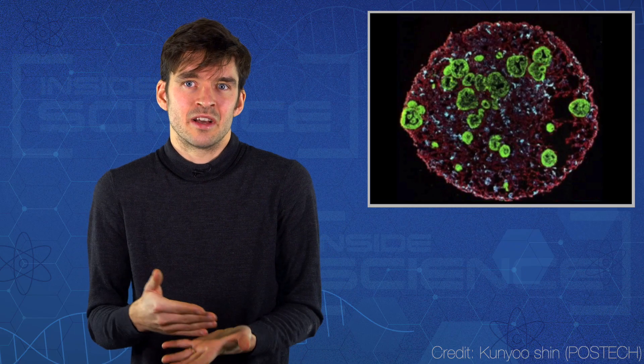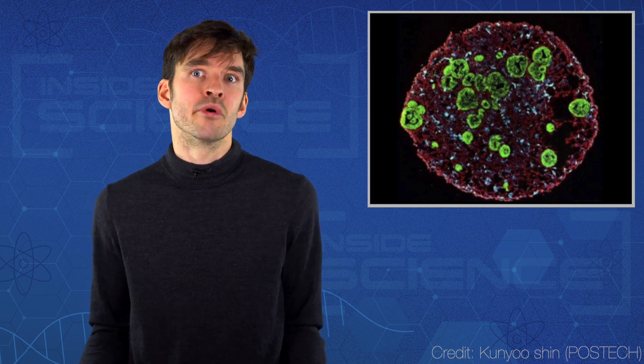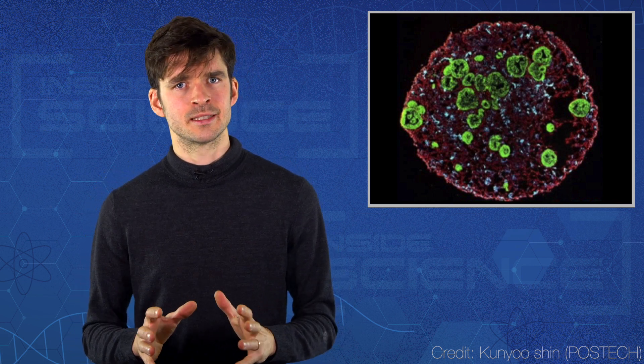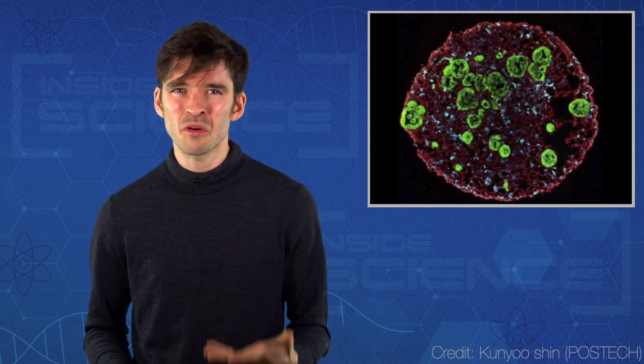You can grow a tiny underdeveloped heart, or a lung, or even a brain. But these organoids have a problem. They're not very complicated. Not nearly as complicated as a real human organ. And that's an issue if you want to study a complex disease like cancer.